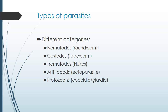There are different categories of parasites. Nematodes are typically called roundworms — if you cut them in half on cross section, they're round. There are cestodes, which are tapeworms. Trematodes, which are flukes. Arthropods, which are ectoparasites that live on the outside of the host. And also protozoans, which are single-celled organisms, unlike all of the other categories.